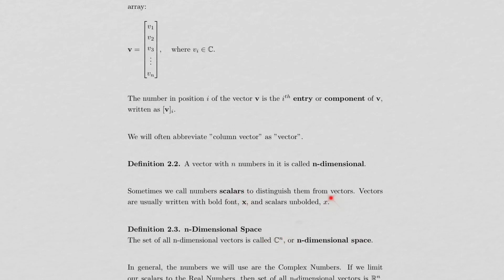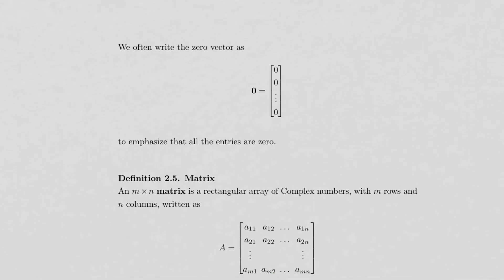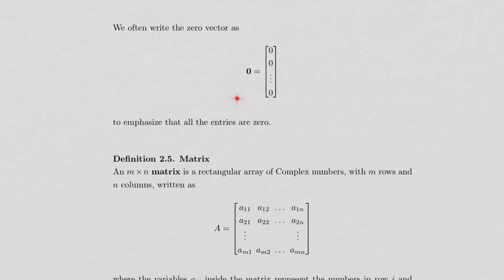We write vectors with a bold font and numbers inside a vector with an unbolded font. We call these numbers scalars to distinguish them from vectors. The zero vector is the vector that's got all zeros in it. The zero vector is written as the numeral zero bolded. We can see what the zero vector in C-n looks like by writing out all the zeros, which we often do to emphasize that all the entries in the zero vector are zero.